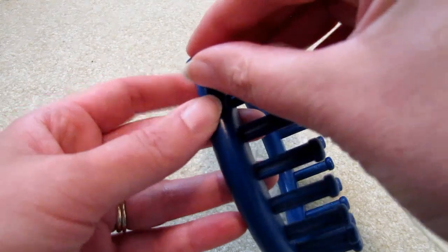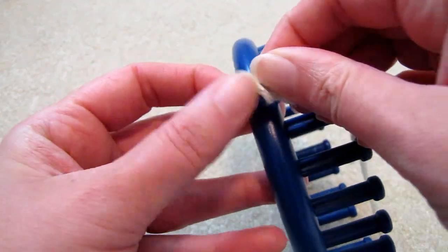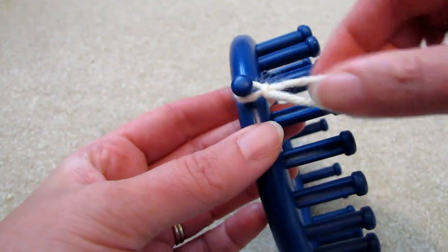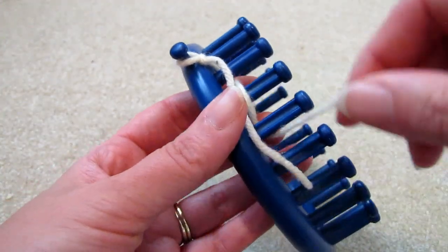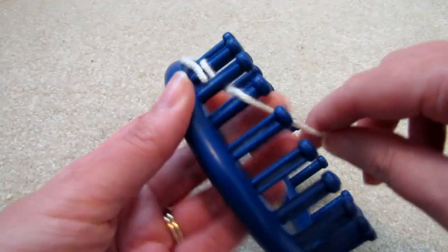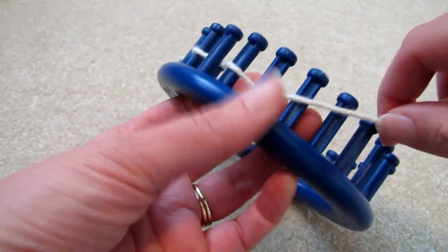We'll cast on using the drawstring method. So placing the slipknot over the holding peg, we'll start weaving in front and behind each peg.